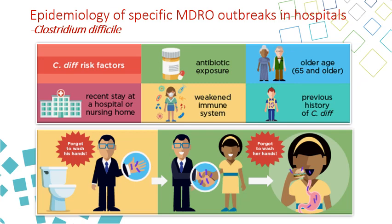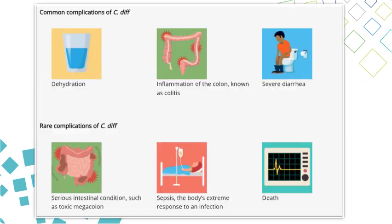This slide shows the major risk factors for Clostridium difficile and how it is transmitted from a contaminated bathroom by those who do not wash their hands, spreading it to other people. This slide shows the major presentations and complications of Clostridium difficile, including dehydration, inflammation of the colon, severe diarrhea, serious intestinal conditions including toxic megacolon, sepsis, and sometimes death.